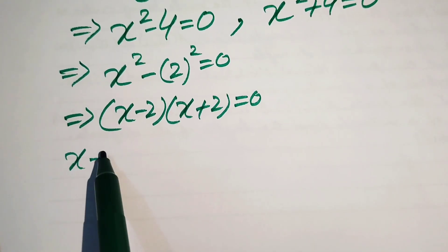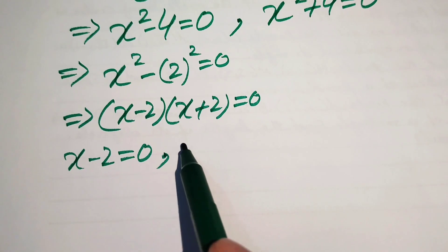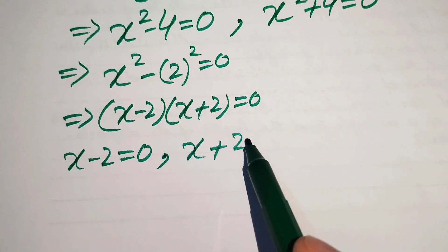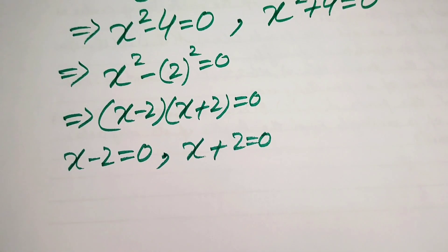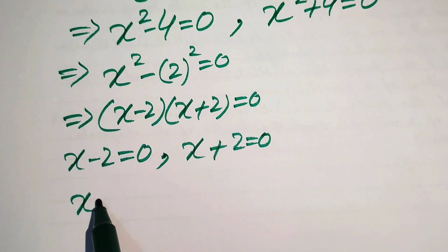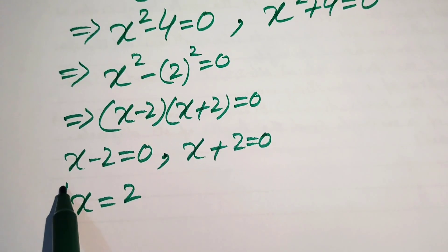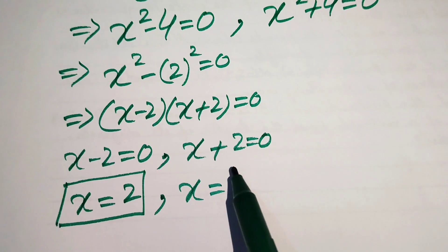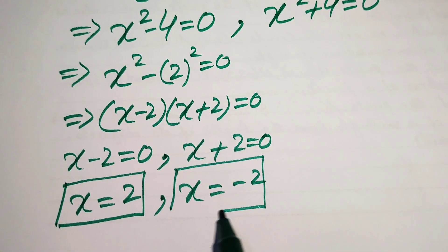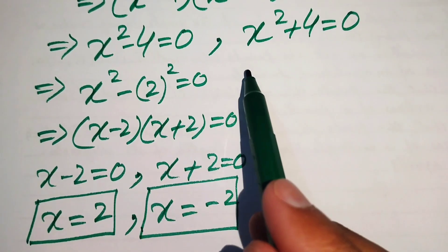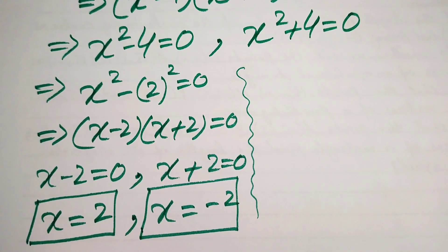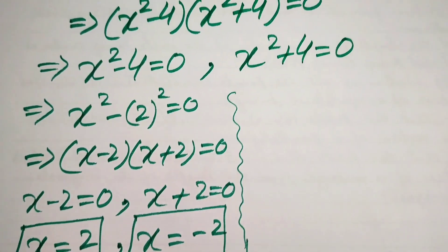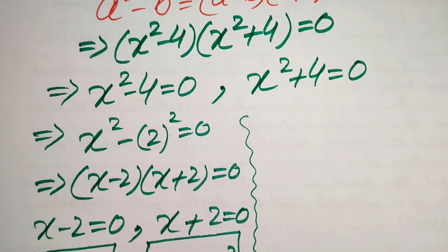We again divide into two sub-cases. Sub-case 1: x minus 2 equals 0, giving x equals 2 — this is our first root. Sub-case 2: x plus 2 equals 0, giving x equals minus 2 — this is our second root. So from Case 1 we get two real roots: x equals 2 and x equals minus 2.